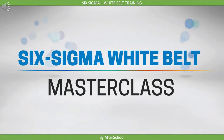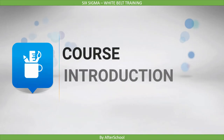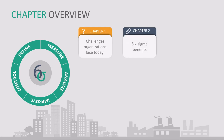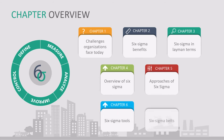Welcome to the Six Sigma White Belt training course. This is an introductory lecture. It will help you to understand what you are going to learn in this course. In this course, we will cover challenges organizations face today, the Six Sigma benefits, Six Sigma in layman terms with example, overview of Six Sigma, the approaches of Six Sigma, Six Sigma tools, and the Six Sigma belts. Now, let's briefly see the overview for each of these topics.